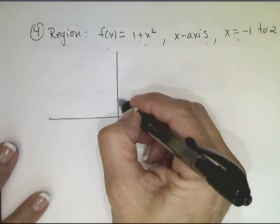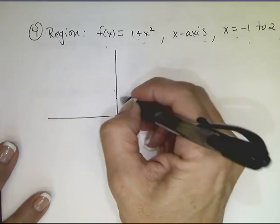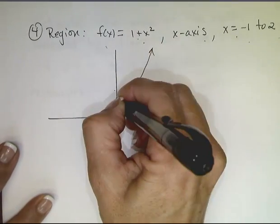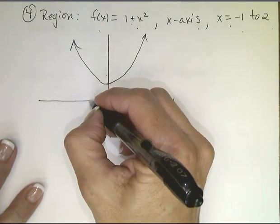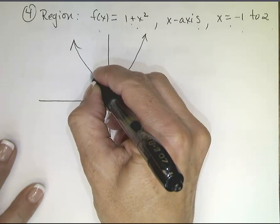So 1 plus x squared, we know, is a parabola. Shift it up 1. So it looks like this. Not a very good drawing, but you get the point. Negative 1 passes through the point negative 1, 2.